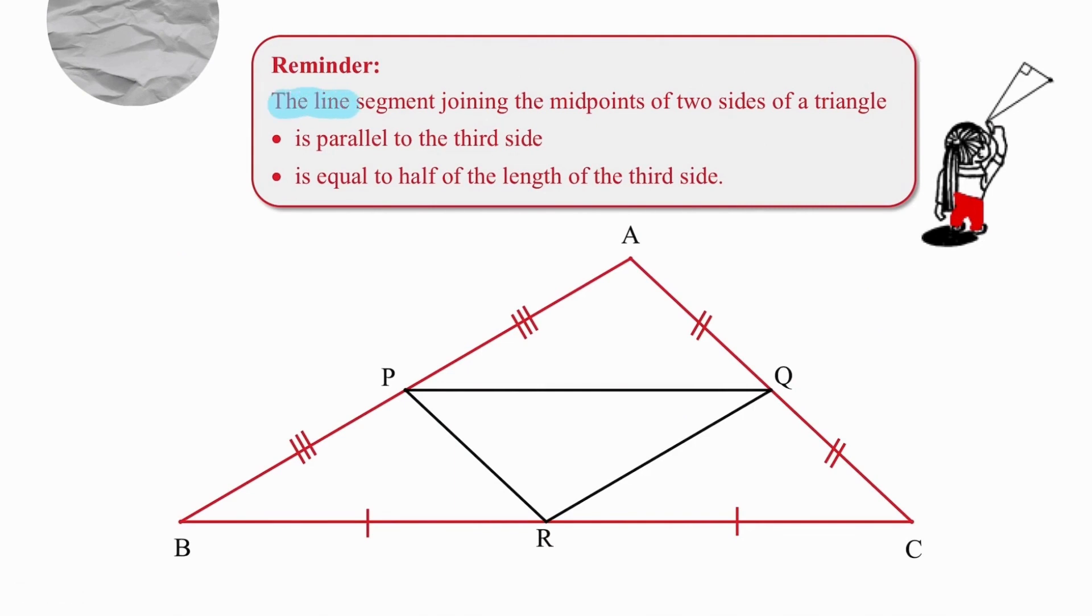In this particular question, the fact that the line segment joining the midpoints of two sides of a triangle is equal to half the length of the third side is very useful to know. So if we have a look at that, joining the midpoints P and Q gives us a length exactly half of the length of BC.